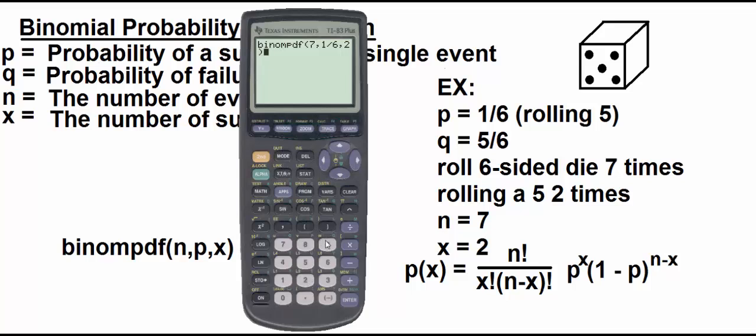So you're rolling and getting two fives. So maybe you get a five and a five, and then you have five straight rolls that are different things. Maybe you get a five on the second and fourth roll. That part doesn't matter. What matters is you're getting exactly two fives. And the calculator will calculate it for you. So that's a little less than 25%, so 23.44% of the time. If you roll a die seven times, you would expect to get exactly two fives. So that's how you use the calculator to calculate the binompdf.